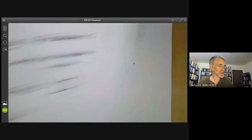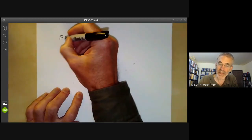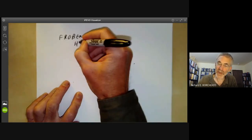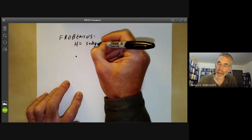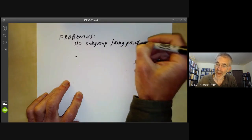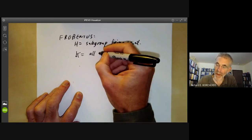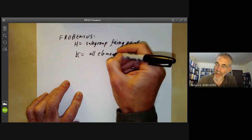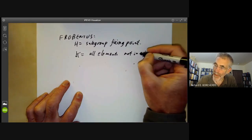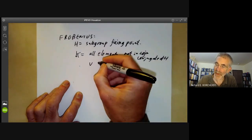There are two basic theorems about Frobenius groups, which I'm not going to prove. The first one is by Frobenius. So suppose H is equal to the subgroup fixing a point. And let K be all conjugates. So all elements not in a conjugate of H.